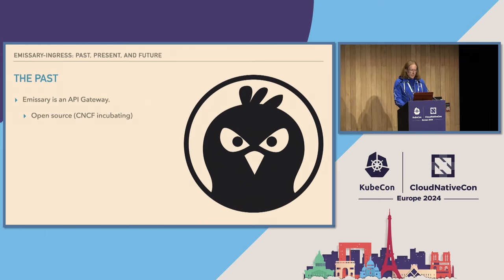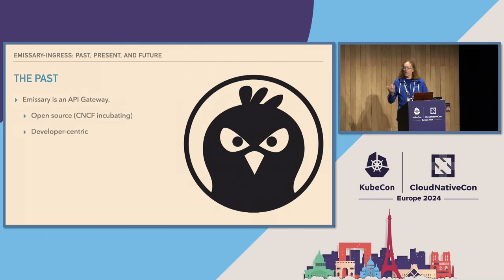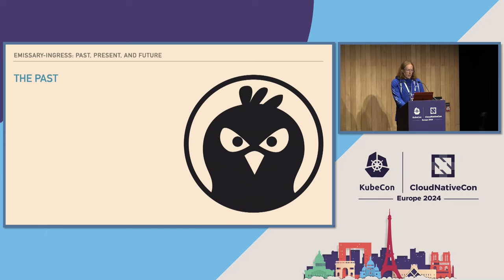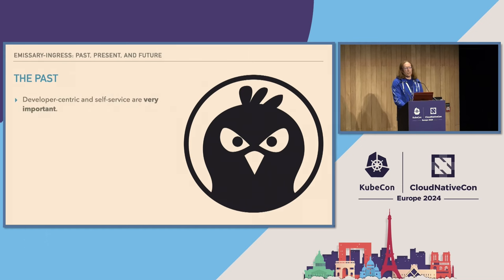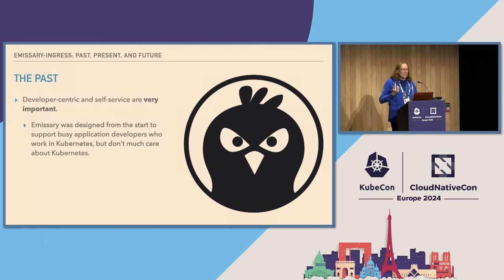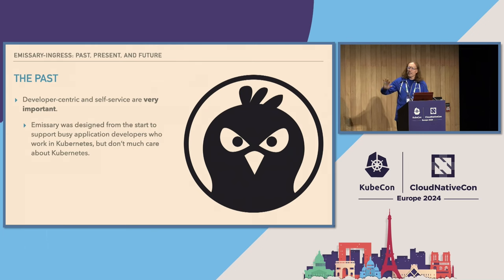It's a CNCF incubating project. It is a developer-centric thing, meaning its entire focus for its life has been on enabling application developers to get things done. It is self-service in that it tries to arrange it so that application developers don't have to go off and talk to other people in ops, open tickets, and all sorts of things like that. And it is a very opinionated API gateway. The developer-centric and self-service parts are very important. Emissary was designed from the start around the idea that the application developer is the important person, and that application developers generally don't care very much about Kubernetes — they just want things to work.